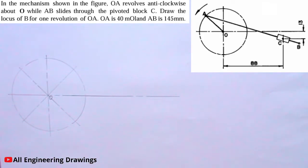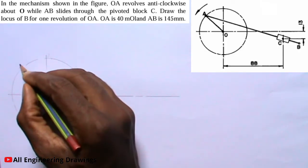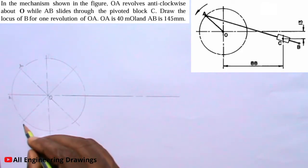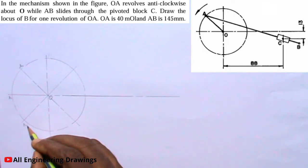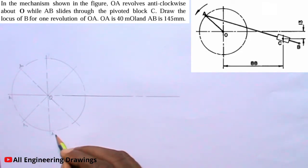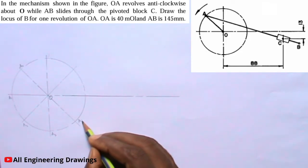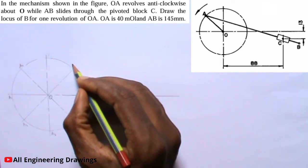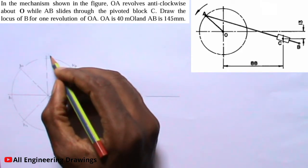The circle has been divided into 8 equal parts successfully. Now I will label the points where the lines of division intersect the circumference of the circle. I will call this point A0, this point A1, this point A2, A3, A4, A5, A6, and A7.